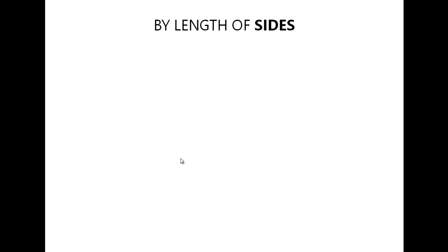Triangles can be essentially classified based on two properties: first, by the length of the sides, and second, by the measure of the angles. Let us first look at the triangles classified based on the length of the sides.